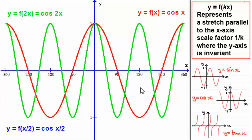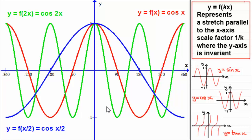For y equals f of a half x, cos of a half x, k is a half, so 1 divided by a half is 2. The original graph of y equals cos x is pulled out by a scale factor of 2. The y-axis is invariant, so points on the y-axis stay put. The point at 90 degrees is pulled out by a factor of 2. The point at 180 degrees, minus 1, gets doubled to 360 degrees, minus 1. The same applies on the left-hand side.